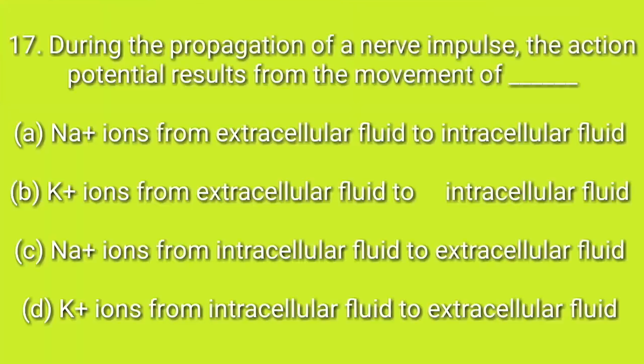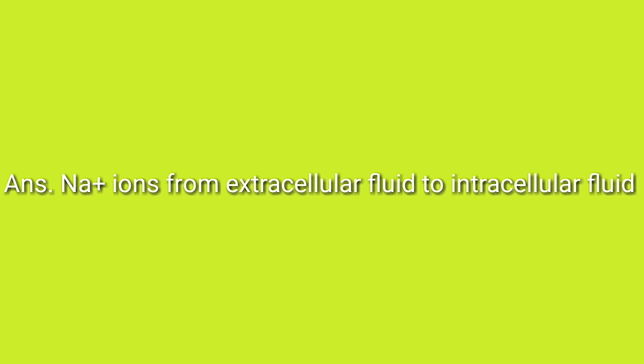During the propagation of a nerve impulse, the action potential results from the movement of dash. Option A: Na+ ions from extracellular fluid to intracellular fluid. Option B: K+ ions from extracellular fluid. Option C: Na+ ions from intracellular fluid to extracellular fluid. Option D: K+ ions from intracellular fluid to extracellular fluid. Answer: Na+ ions from extracellular fluid to intracellular fluid.